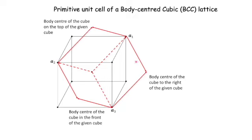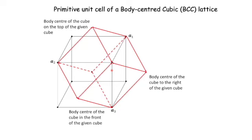You can now see three parallelograms meeting at the body center. These are the three faces of the primitive unit cell. We also have seven points of the primitive unit cell: one is the body center point, then three corners of the original cube, and three body centers of the cubes adjacent to this cube. A parallelepiped unit cell consists of eight points, so one more point — a corner of the cube — is required to complete the unit cell.